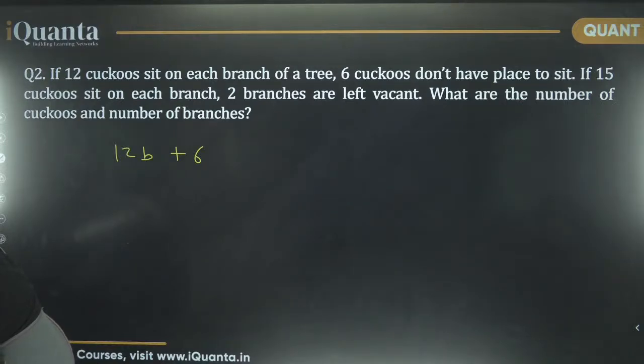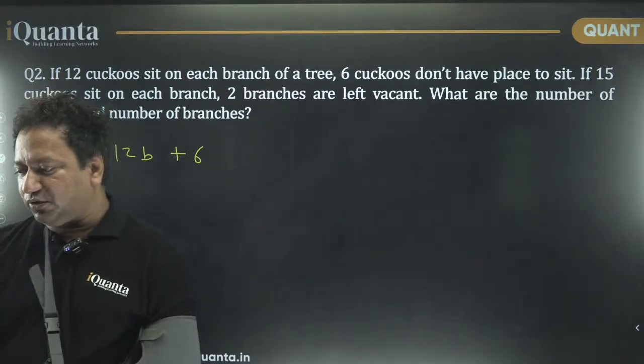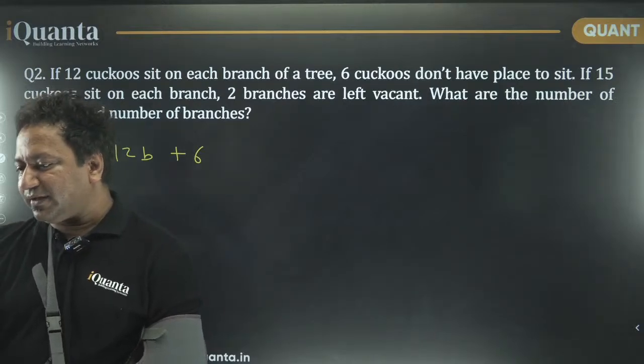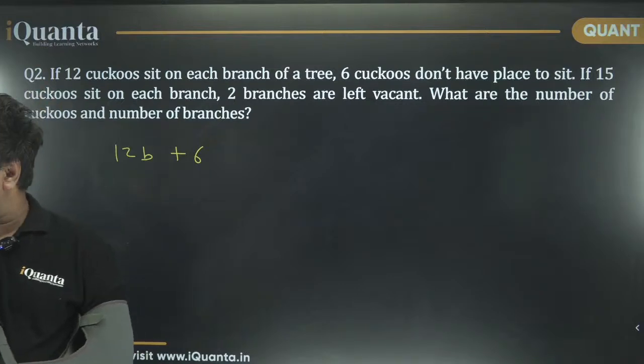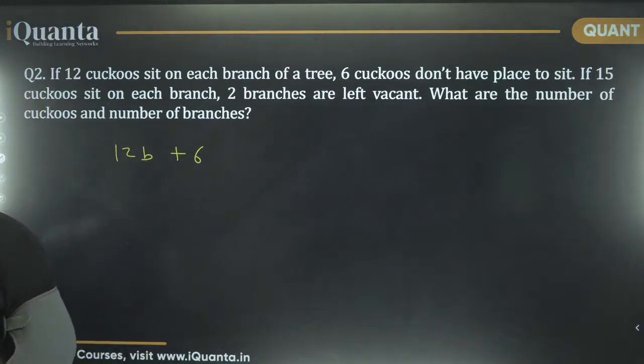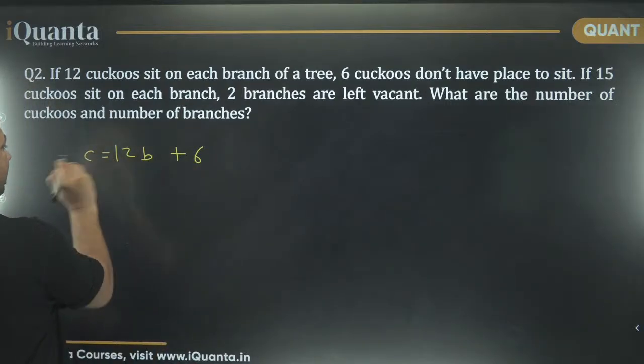Tanya, if you are probably watching this on YouTube, I was talking to the students who are in batch two of iQuanta. For them, because we have taken so many hours of workshop, this is a marathon in which we will do things quickly. I hope you get that. 12B plus 6. This is the value of C, cuckoos.